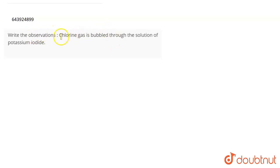So the question is that you have to write the observation when chlorine gas is bubbled through the solution of potassium iodide.